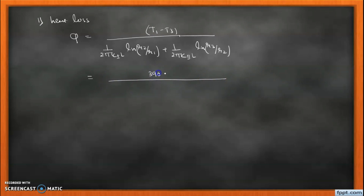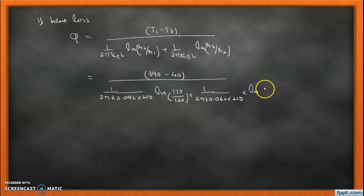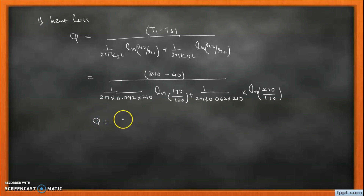Substituting all values: k1 = 0.092, L = 210, r2 = 170, r1 = 120 for the first layer, and k2 = 0.062, r3 = 210, r2 = 170 for the second layer. Solving the equation gives Q = 64,302.65 watts, or equivalently 64.30 kW.